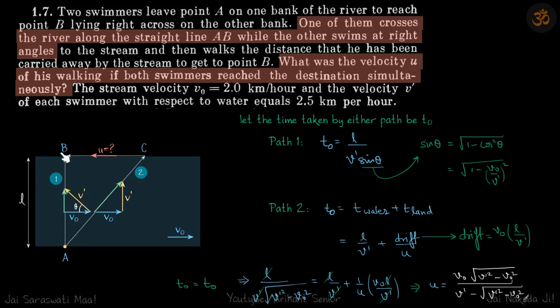So one fellow crosses straight and the other fellow is swimming at right angles to the direction of water. If this is the river flow velocity, the eventual velocity of the first one is directly towards point B. This is the vector sum of V0 and V dash. V dash is velocity of man with respect to river.